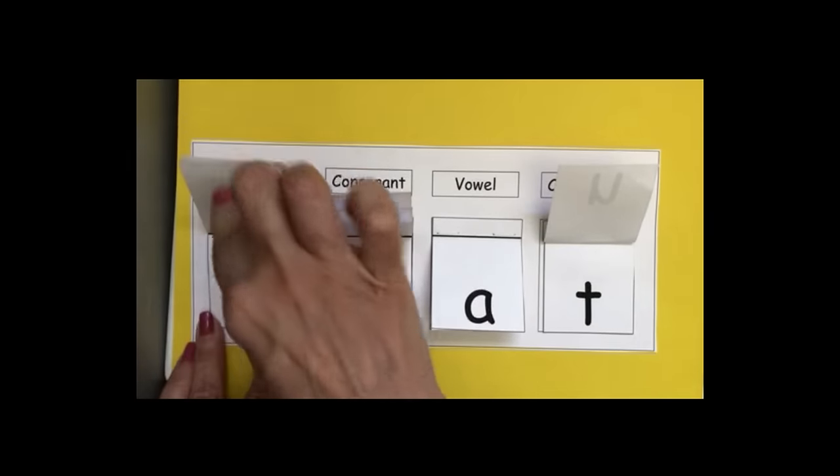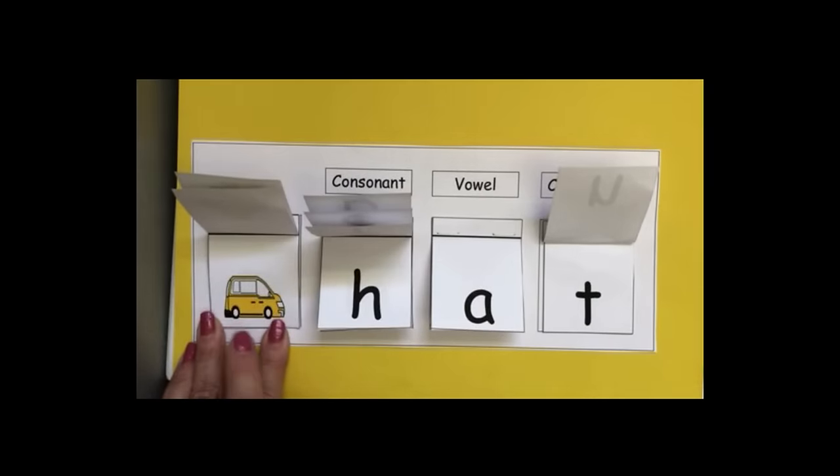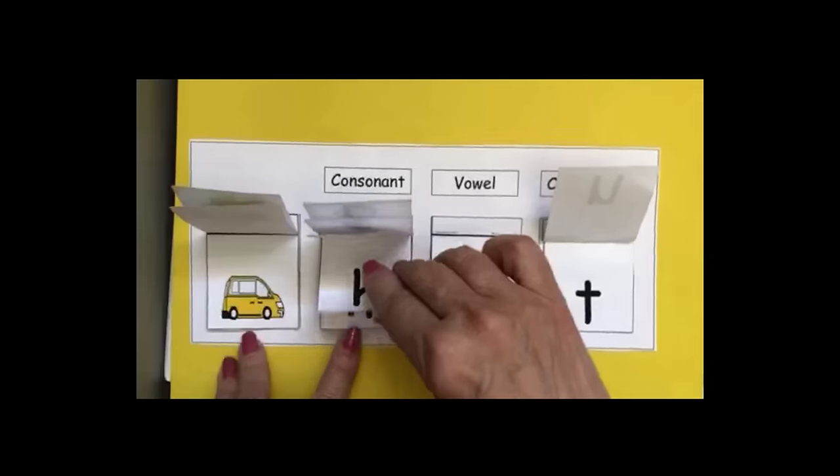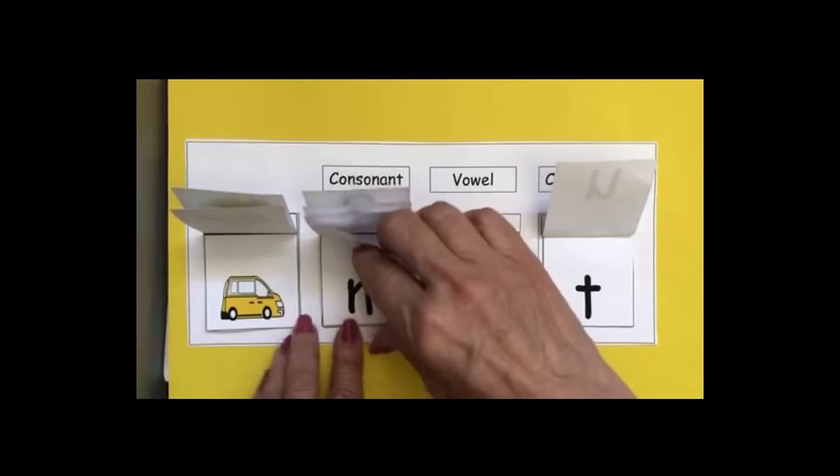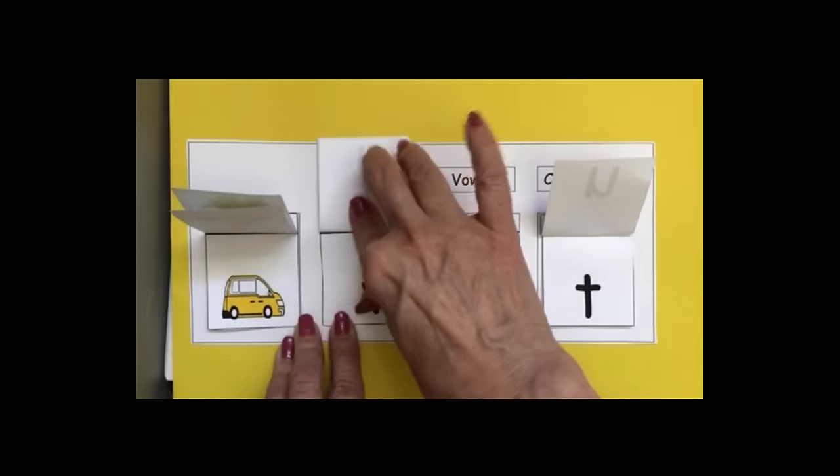Let's do one more. Let's go here. This is a van. V, v, v. If kids know the alphabet well, they'll know it's at the end. Otherwise, they can go all the way through.